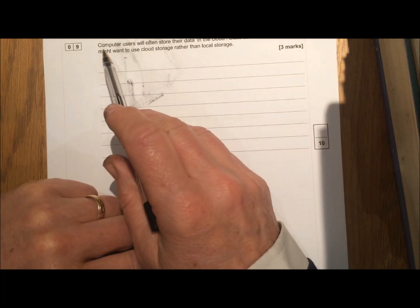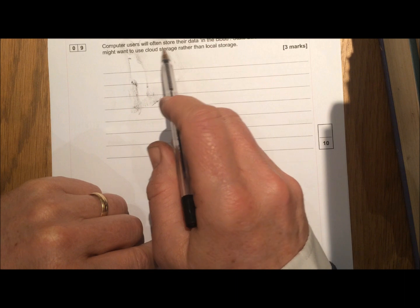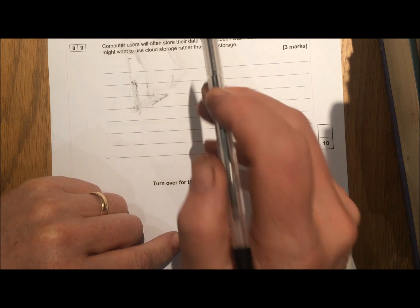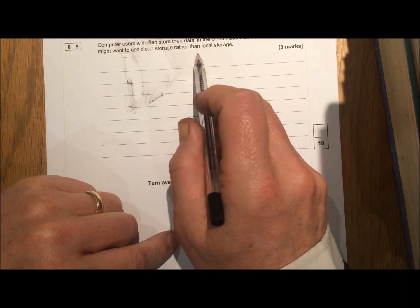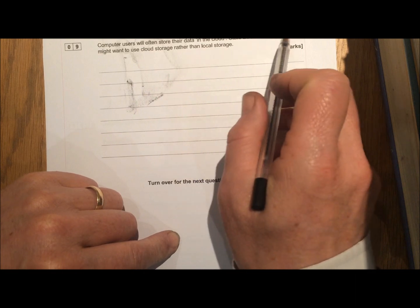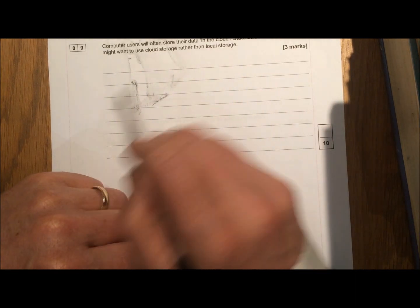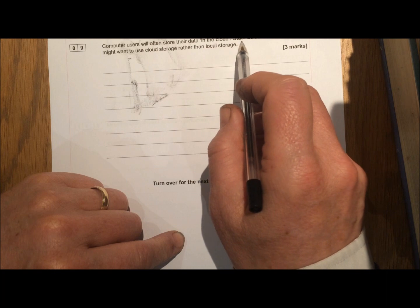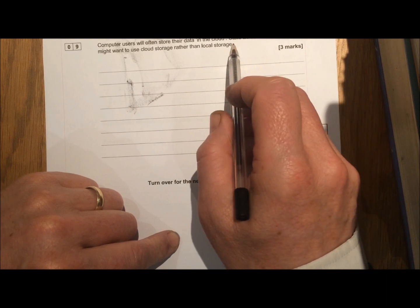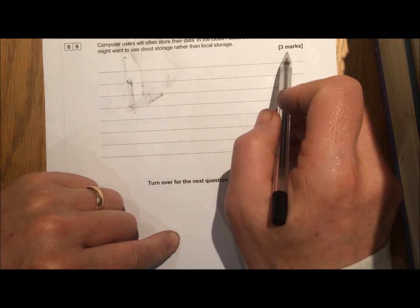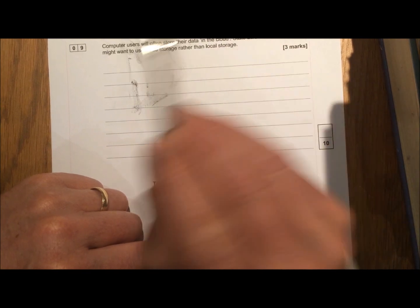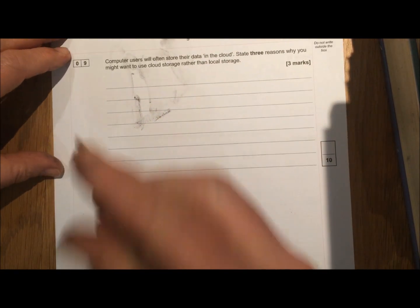State three reasons why you might want to use cloud storage rather than local storage. Local storage, in other words, storing it on your local device. Why might you want to use cloud storage? Now notice this is a state question. So you don't have to go into much detail. There's only three marks, one for each one.